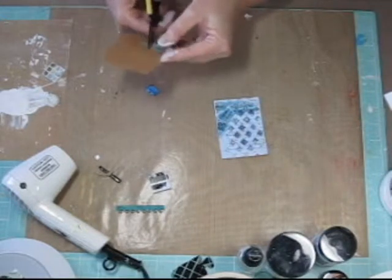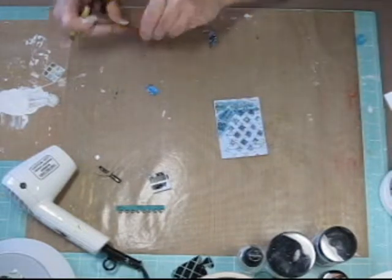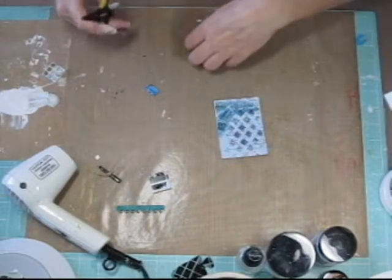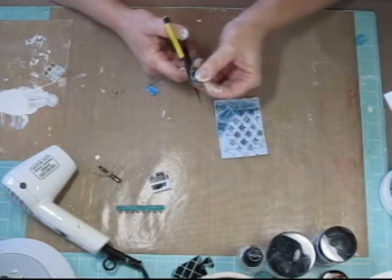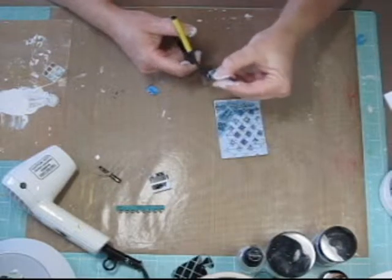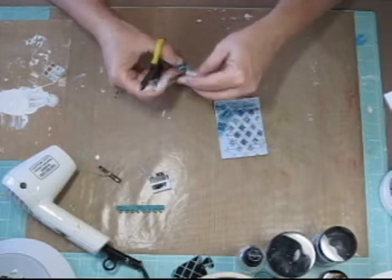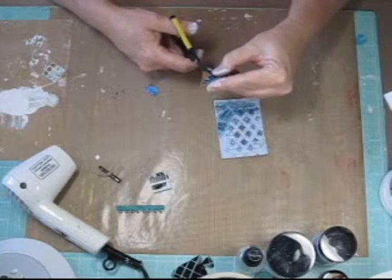Now the two pieces that I fussy cut are dry on that spare piece of ATC. So now I'm just cutting them out, and you can see it's not super thick, but it added enough stability for what I wanted to do for my ATC card.